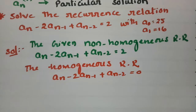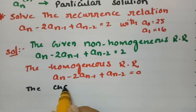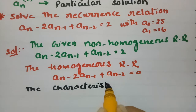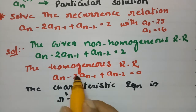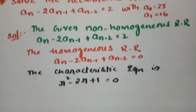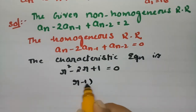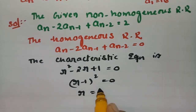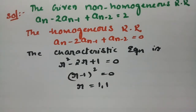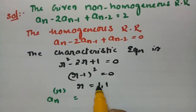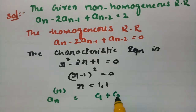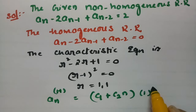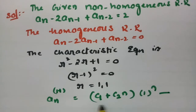We need the characteristic equation. Since this is of order 2, the characteristic equation is r² - 2r + 1 = 0, which factors as (r-1)² = 0. The roots are r = 1, 1 (repeated roots). Therefore the homogeneous solution is a_n^(h) = C1·(1)^n + C2·n·(1)^n.